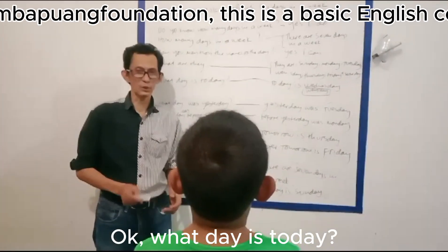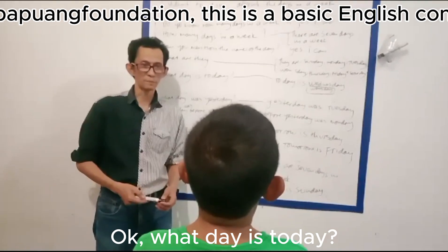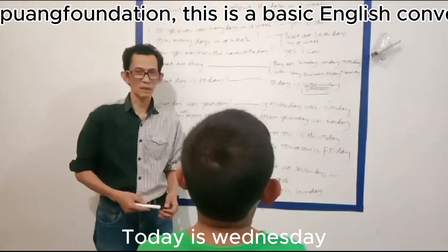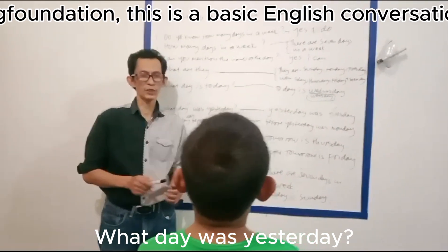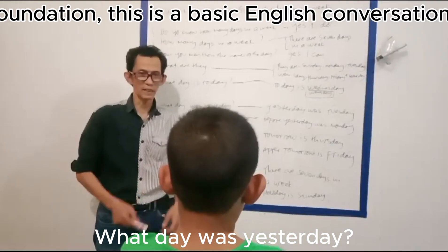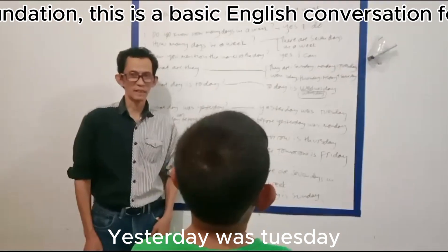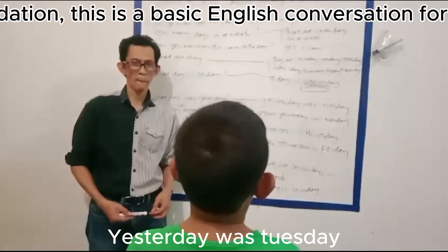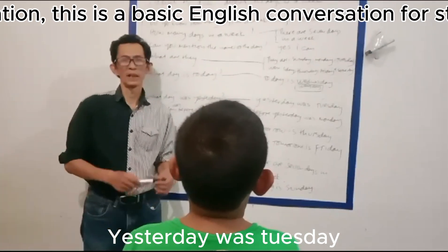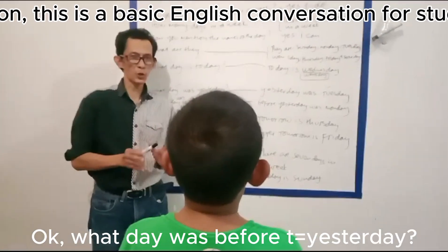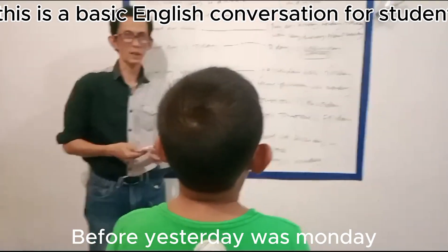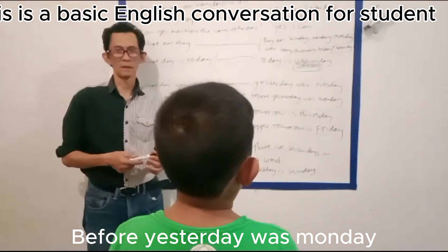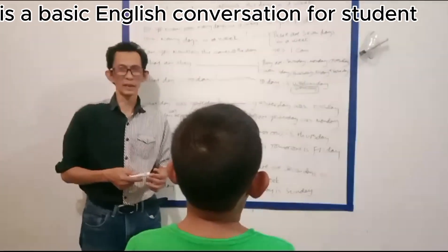What day is today? Today is Wednesday. Okay. What day was yesterday? Yesterday was Thursday. Okay. What day was before yesterday? Before yesterday was Thursday.